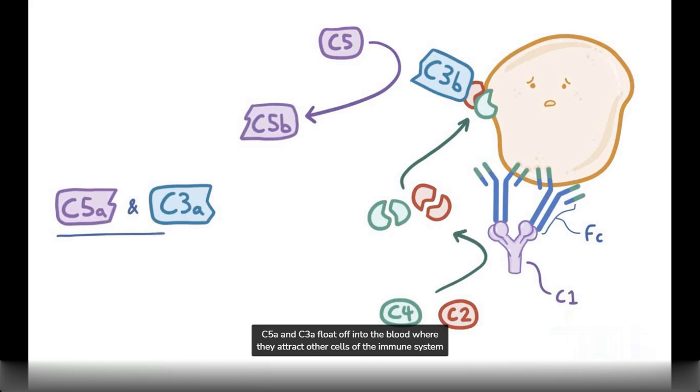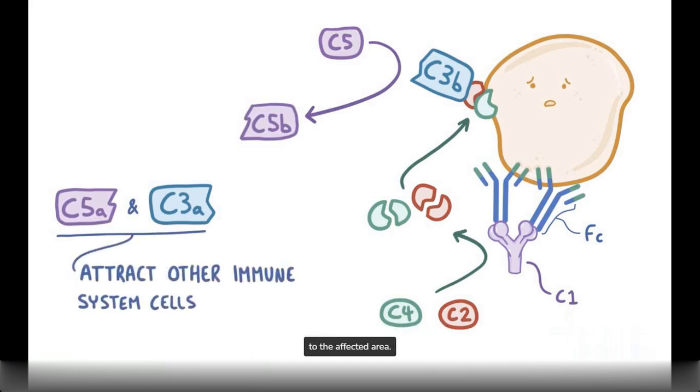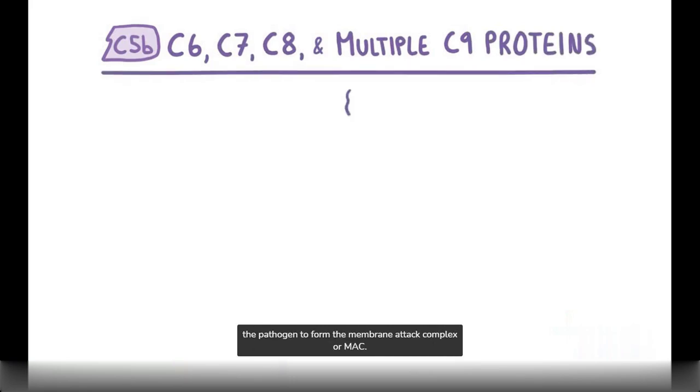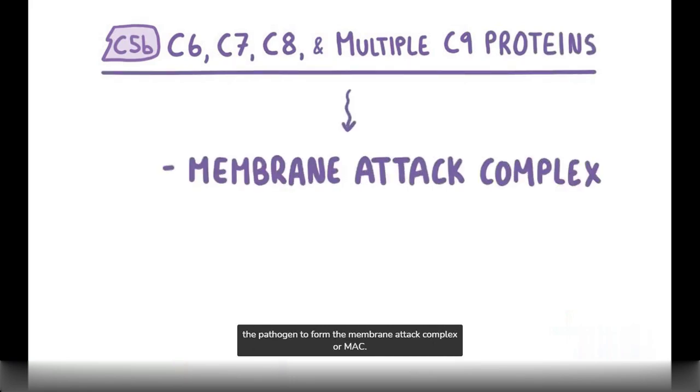C5a and C3a float off into the blood where they attract other cells of the immune system to the affected area. Meanwhile, C5b, C6, C7, C8 and multiple C9 proteins come together on the surface of the pathogen to form the membrane attack complex or MAC.